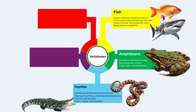Reptiles are vertebrates that have dry skin covered with scales or plates. They have full limbs which help them crawl or run. They are cold-blooded, which means they depend on the external temperature to control their body heat. Lizards are cold-blooded — unlike us, they don't have their own internal heating system. Instead, they rely on the weather outside. On sunny days the lizard feels warm, and on cold days it feels cool. That is why we call them cold-blooded and why you see lizards basking in the sun — they're trying to warm up. Some examples of reptiles are snakes, lizards and crocodiles.